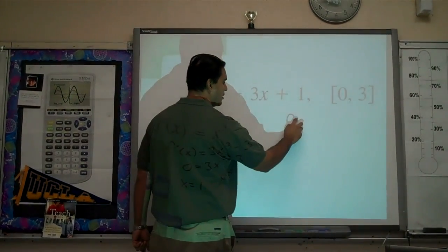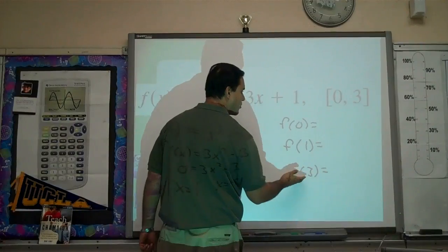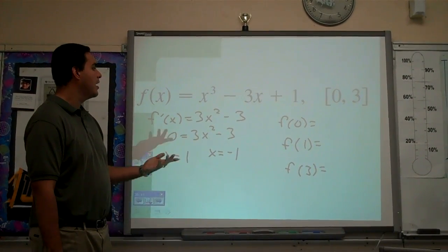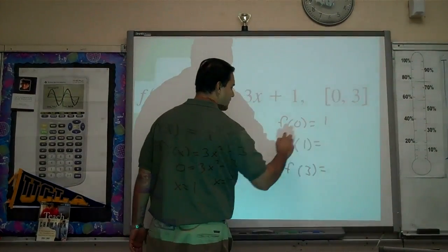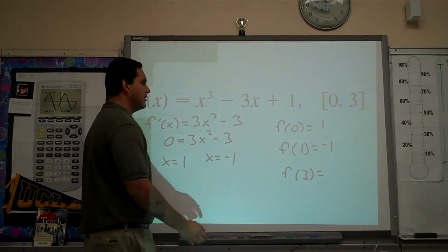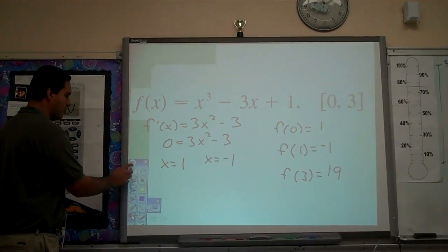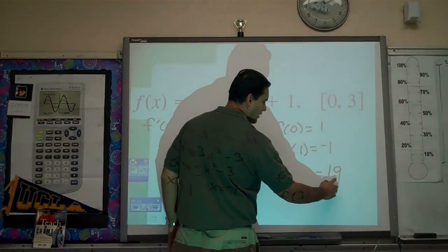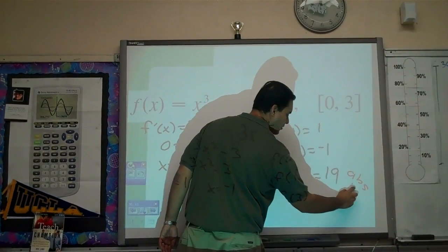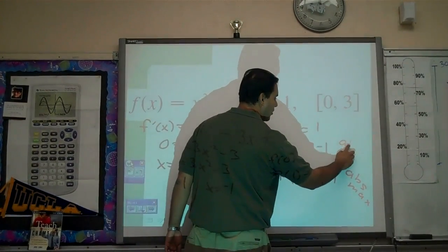So we're going to plug in 0 into the function, plug in 1 — the critical number — and 3 — the other endpoint. We plug in the endpoints and the one critical number within the interval. If we plug in 0, the output value is 1. If you plug in 1, the output value is negative 1. And if you plug in 3, the output value is 19. By comparing the output values, you can see where the absolute max is and where the absolute min is. The absolute max is at x equals 3, with a value of 19. The absolute min is at x equals 1, with a value of negative 1.